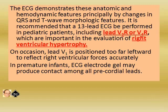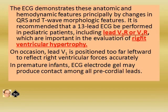The ECG demonstrates these anatomic and hemodynamic features principally by changes in QRS and T-wave morphologic features. It is recommended that a 13-lead ECG be performed in pediatric patients, including lead V3R or V4R, which are important in the evaluation of right ventricular hypertrophy. On occasion, lead V1 is positioned too far leftward to reflect the right ventricular forces accurately. In premature infants, ECG electrode gel may produce contact among all precordial leads.